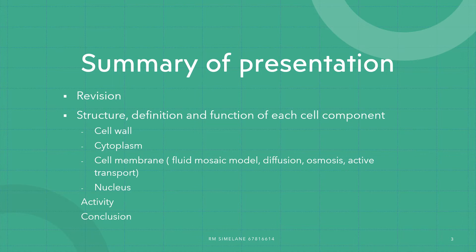We will move on to the structure, definition, and function of each cell component — looking at the cell wall, cytoplasm, and cell membrane. On the cell membrane, we are going to focus on the fluid mosaic model, diffusion, osmosis, and active transport. Grade 10 life sciences is the foundation of Grade 11 and 12, so we will cover these topics on a touch-and-go basis, but that information will be very crucial in later grades.